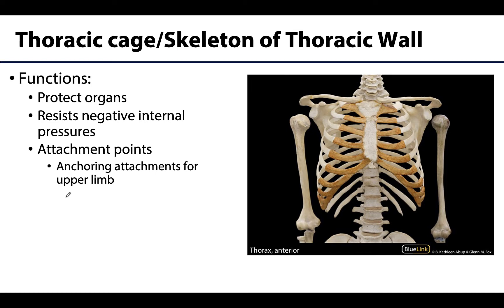When we say the thoracic cage, we mean the skeleton of the thoracic wall — the bones in this region — which will include the thoracic vertebrae as well, though we discussed those when talking about the back. So we're mainly going to focus on ribs and sternum here. The thoracic wall includes the muscles that extend between the ribs, those intercostal muscles.